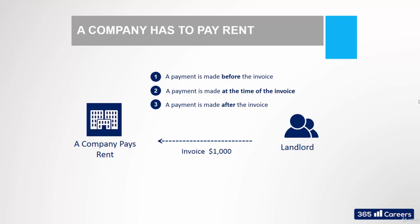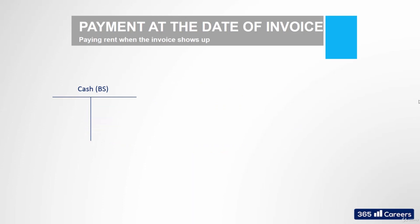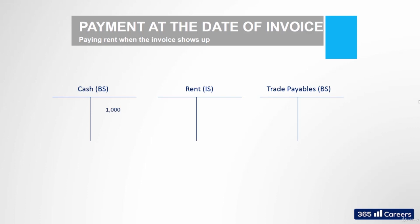Let's consider the following example. The firm that sells office equipment pays $1,000 for rent. We'll need to draw three T-accounts – cash, rent, and trade payables. In the first scenario, when payment and expense recognition occur simultaneously, we will pay $1,000 for rent. Our cash will decrease by $1,000, and because cash is an asset, we must credit it for $1,000. We'll debit rent for $1,000 because it is an expense and it increases.